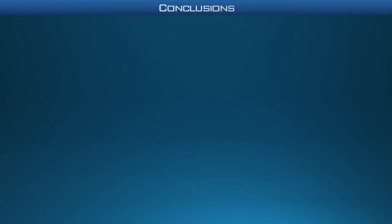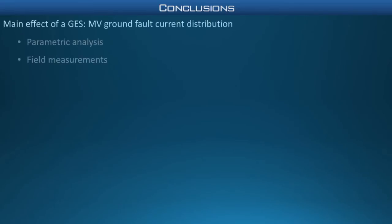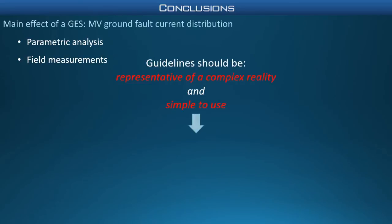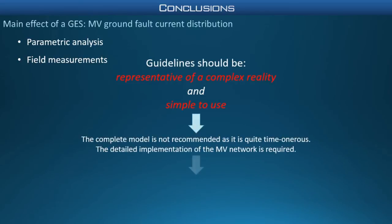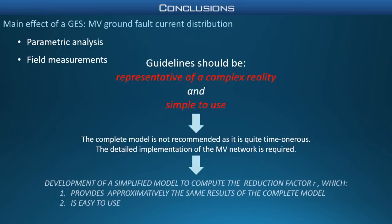Now, let's go to the conclusion. In my PhD work, we were able to prove the strong reduction of the current injected into the soil by the earthing system of the faulted substation, identifying the main factors of influence. Both analytical simulations and field measurements were considered to provide a proposal for a practical guideline to identify global earthing systems. This guideline, which I haven't presented in this video because it's the object of a new manuscript not yet published, is based on a simplified analytical model to compute the reduction factor. We have arrived at the end of this short presentation of my PhD work. I hope that I was able to convince you of the importance of this research activity. Please, if you have any questions, don't hesitate to contact me. Thanks for your attention.